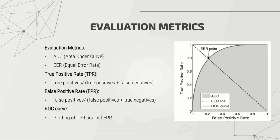Going into the experimentation, the evaluation metrics used by most researchers in crowd anomaly detection to compare methods are area under curve (AUC) and equal error rate (EER). As shown in the diagram, the area under curve is the area under the ROC curve, and the EER is the specific point on the ROC curve. The ROC curve is a plotting of the true positive rate against the false positive rate.